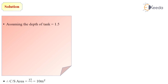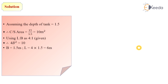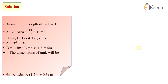Next we calculate the cross-sectional area, which equals capacity of tank divided by its depth. Assuming depth of tank is 1.5 meters, cross-sectional area equals 10 square meters. Assuming length to width ratio is 4 to 1, if width is b then length is 4b. Using the equation 4b squared equals 10, we get width equal to 1.5 meters, and length equals 4 times 1.5 equals 6 meters. So dimensions of the tank are 6 m × 1.5 m × 1.5 m with a freeboard of 0.3 meters.